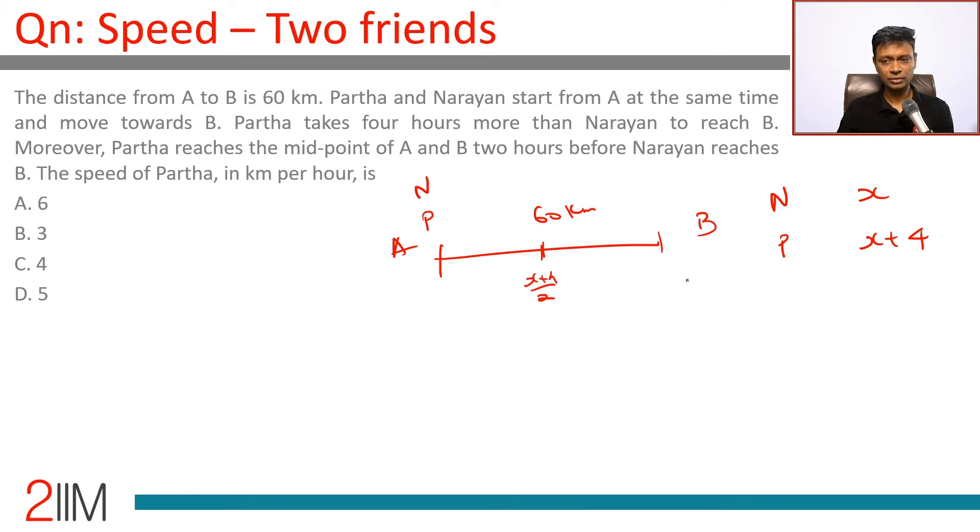Half the time will take two hours before Narayan reaches B. Narayan reaches B at X, two hours before that is X minus 2. It is very simple: X plus 4 by 2 is X minus 2.